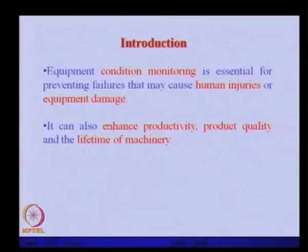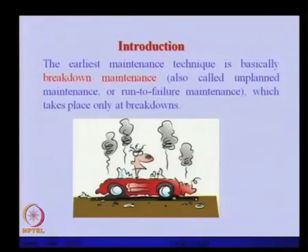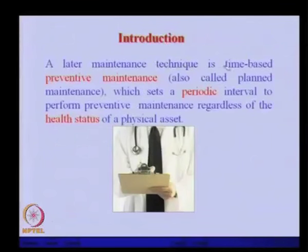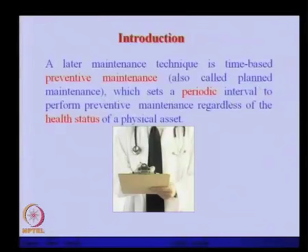Equipment condition monitoring is essentially preventive — preventing failures that may cause human injury or equipment damage. It can also enhance productivity; if we maintain the machine properly, product quality will be good and the life of the machinery will be extended. Earlier, the maintenance technique was breakdown maintenance, also called unplanned maintenance or run-to-failure maintenance, which takes place only at breakdowns. Later, the time-based preventive maintenance — also called planned maintenance — sets a periodic interval to perform preventive maintenance regardless of the health status of the physical asset.